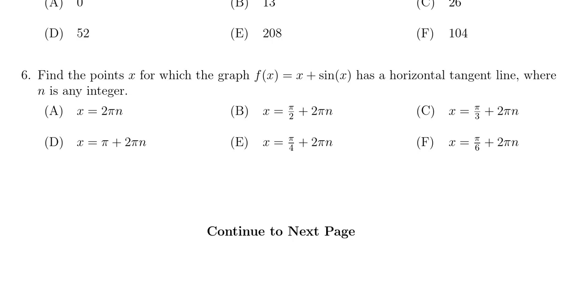In this video we provide the solution to question number six from the practice final exam for math 1210. We're asked to find the points x for which the graph f(x) = x + sin(x) has a horizontal tangent line.